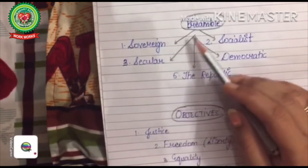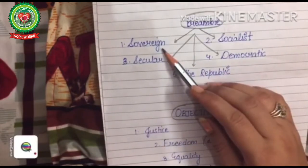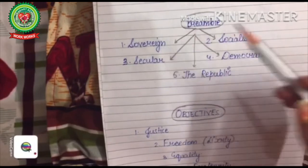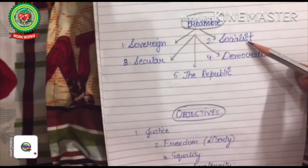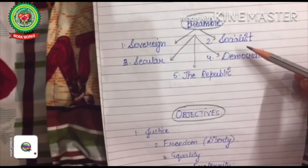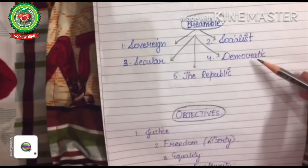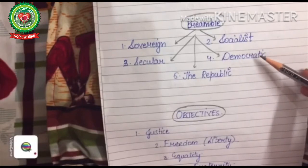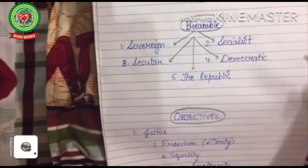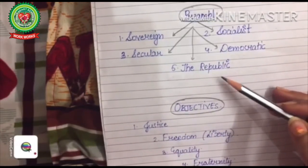The basic elements of the Preamble are: Sovereign — means free from external control; Socialist — means equal distribution of resources among the people; Secular — no state religion; Democratic — government of the people, by the people, for the people; and Republic — it means no king or queen.